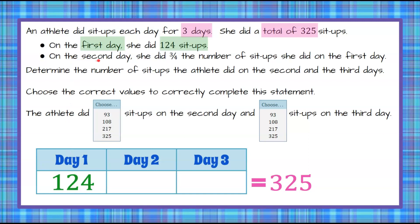The second bullet tells me that on the second day she did 3-fourths the number she did on the first day. So 3-fourths the number means I'm going to take the number from the first day and multiply it by 3-fourths. The test this is taken from is a calculator day, so you would have a calculator option. You would take 3 times 124, then divide by 4, and you're going to get 93.